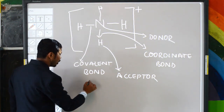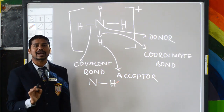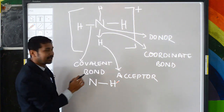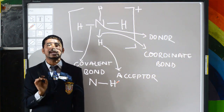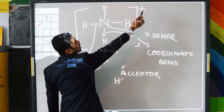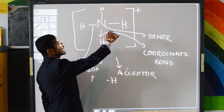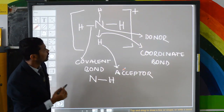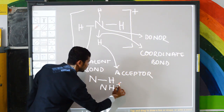Finally, when ammonium ion is formed, all four N–H bonds become identical. We cannot say which bond is coordinate and which is covalent, because the bonds are all equivalent forces of attraction. The positive charge of the ion is written outside the ion as a whole.